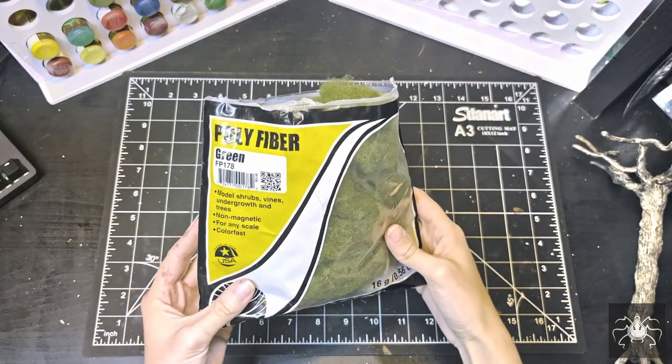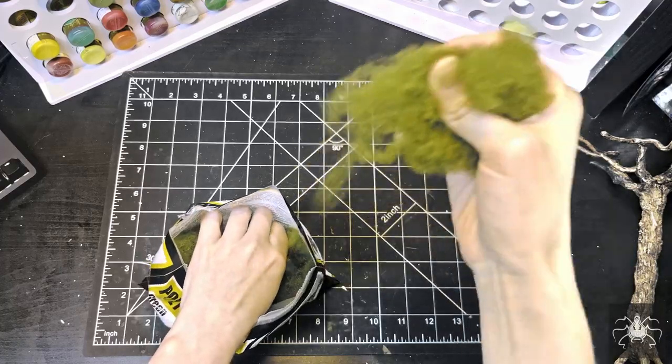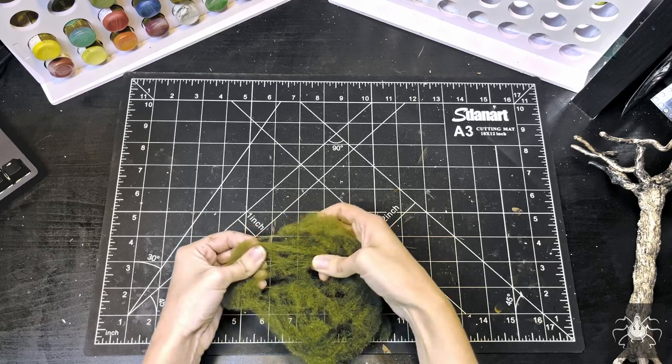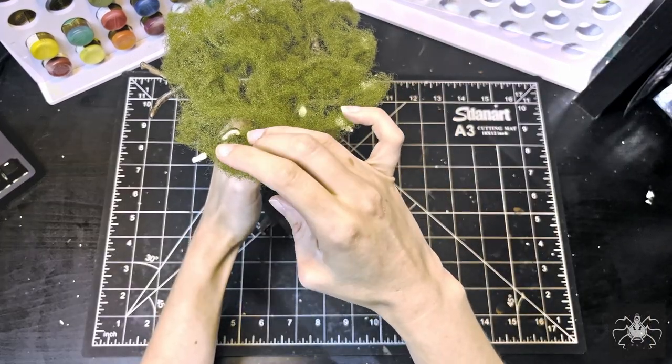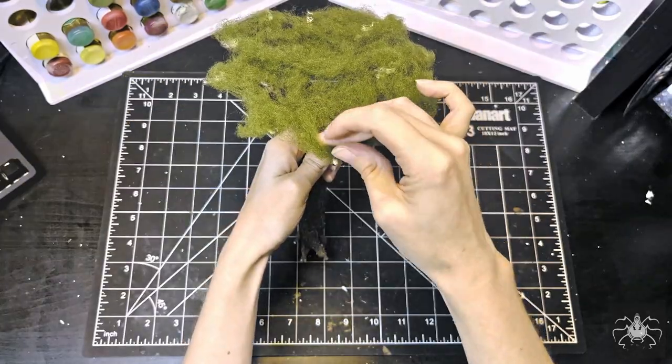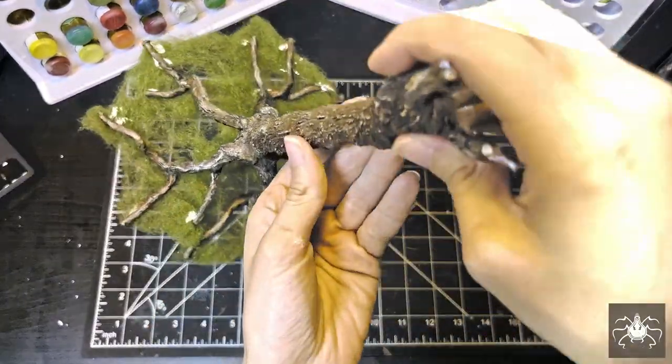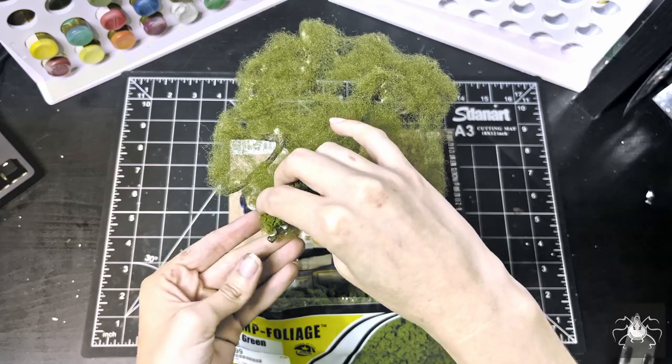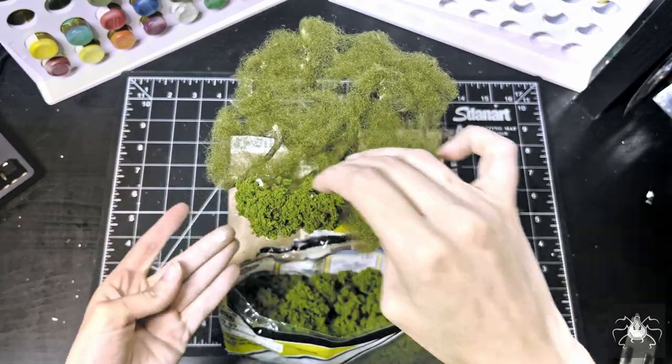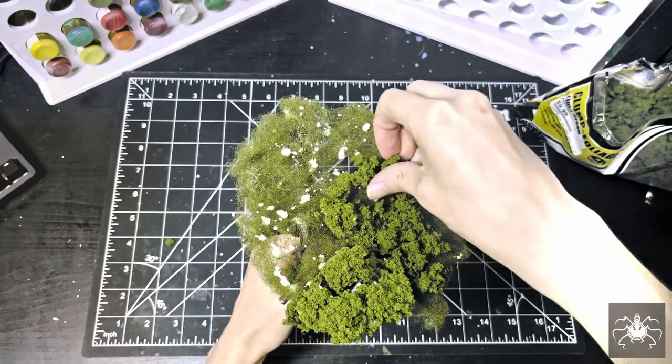And, here is where I diverge from other tree methods I've used in the past. This is green polyfiber by Woodland Scenics, and I'm going to use it to create kind of a canopy resting on top of the branches here. Then, using some clump foliage, also by Woodland Scenics, I will attempt to replicate a leafy green tree.